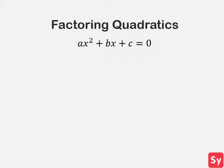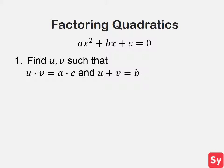Here is how to get its factors. First, we want to find u and v such that u times v equals a times c and u plus v equals b. Doing this will involve some trial and error.